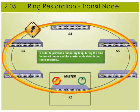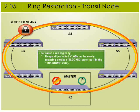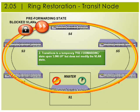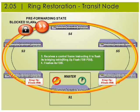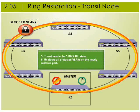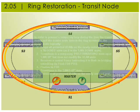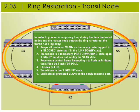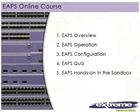To prevent a temporary loop during the time transit nodes and the master node detect the ring is restored, the transit node logically keeps all protected VLANs on the newly restoring port in a blocked state. It transitions to a temporary pre-forwarding state upon link up but does not modify the VLAN state. Upon receiving a ring up flush FDB PDU, it flushes its forwarding database, transitions to the link-up state, and unblocks all protected VLANs on the newly restored port.